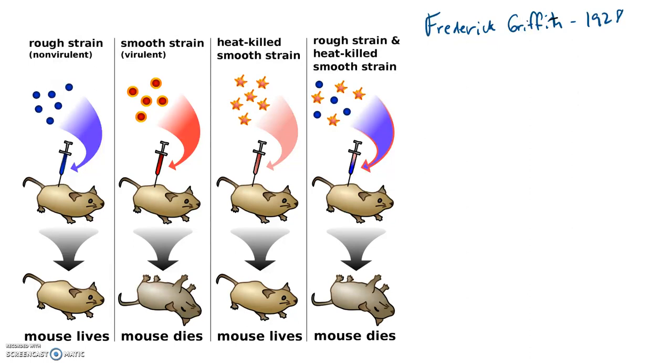This first one was done by Frederick Griffith in 1928, and he was interested in looking at two strains of bacteria. One of these was non-virulent, meaning that it was not able to cause death in the mouse. The other, the smooth strain, was virulent, therefore it did cause the mouse to die.